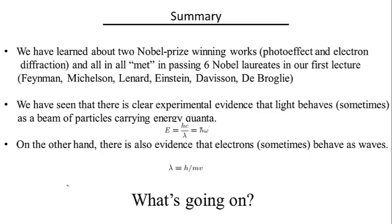And we have seen, these are basically the main conclusions from the two experiments we just discussed, we have seen that there is clear experimental evidence that light behaves sometimes as a beam of particles carrying energy quanta, and the frequency relates to the energy as E = hν, where the wavelength of light relates to the energy according to this expression, where the coefficient of proportionality is the Planck constant. So here, omega is the frequency of light, c is the speed of light, and lambda is the wavelength.